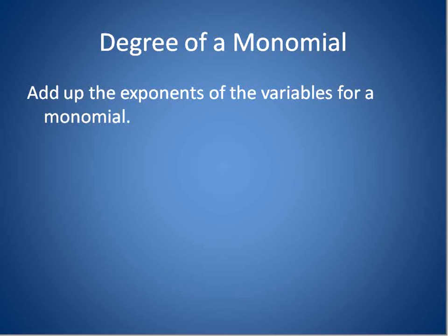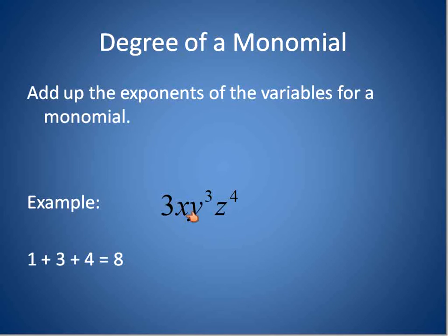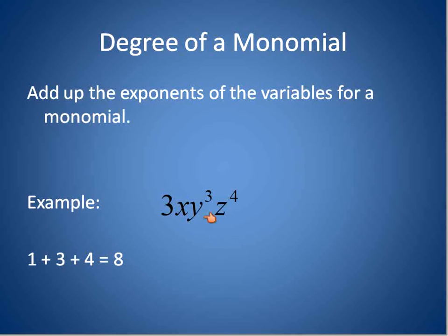The degree of a monomial is found by adding up all the exponents for the variables. Here's an example: 3xy³z⁴. You add up the exponents — x has an implied exponent of 1, y has an exponent of 3, z has an exponent of 4. So 1 plus 3 plus 4 equals 8, meaning the degree of this monomial is 8. Another way to think about it is to expand it out and count the number of variable factors, which also gives you 8. For me, it's just easier to add the exponents than to write it all out, but you can do either.